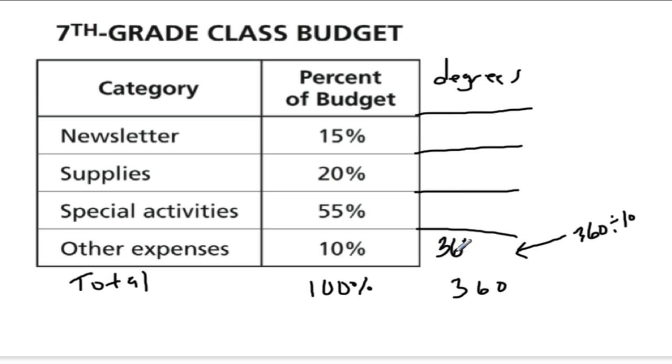Now, what do I hop to next? Well, I think the next logical step is to go to 20% because that will be double the 10%. So if 10% is 36 degrees, 20% is double of that, or 72 degrees.